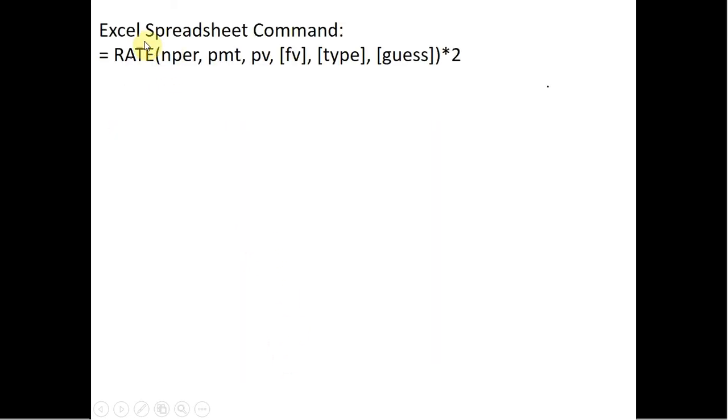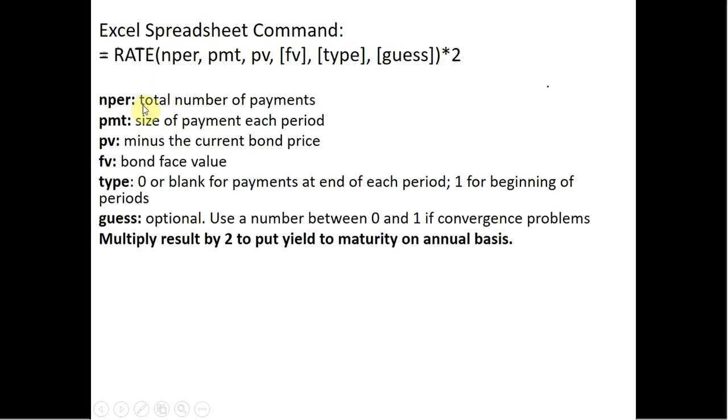We're going to do this in Excel. We're going to use the Excel spreadsheet command RATE that takes these parameters. Let me explain what they are. nper is the total number of payments. So in our problem, it's going to be 30. pmt is the size of the payment each period, so that will be $50.